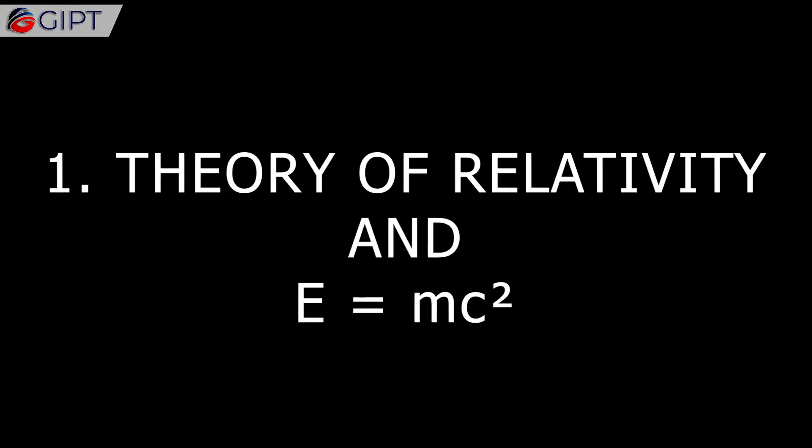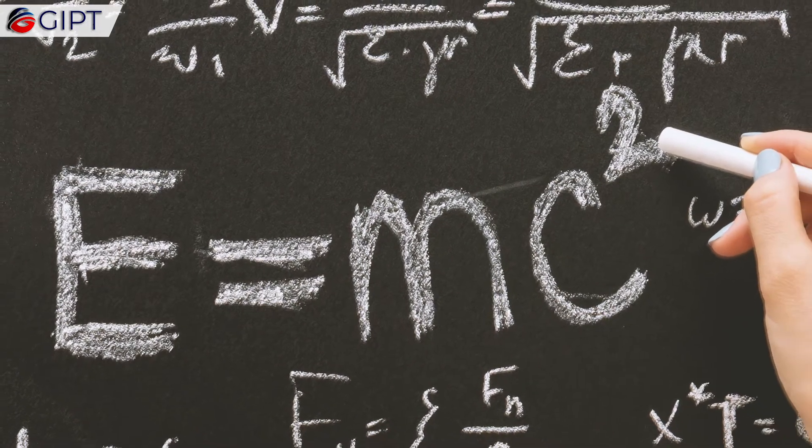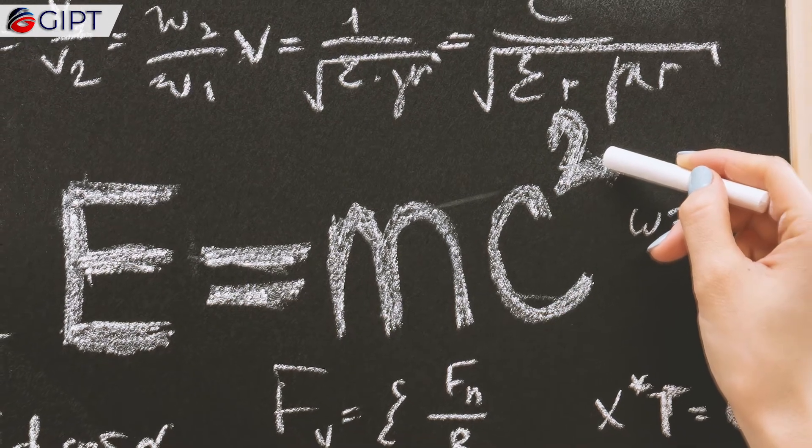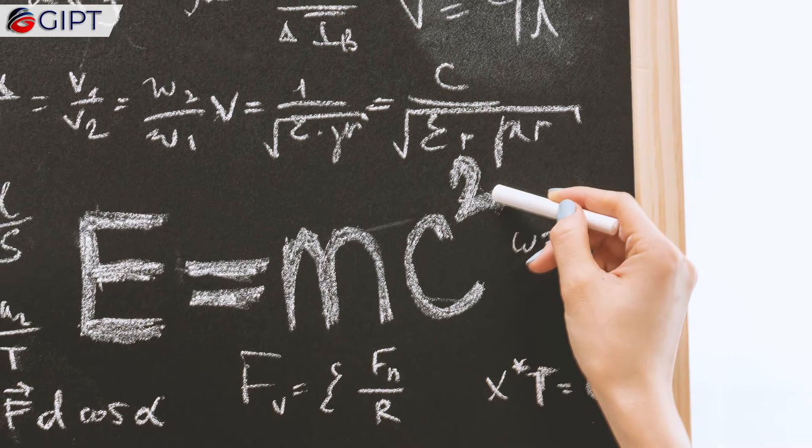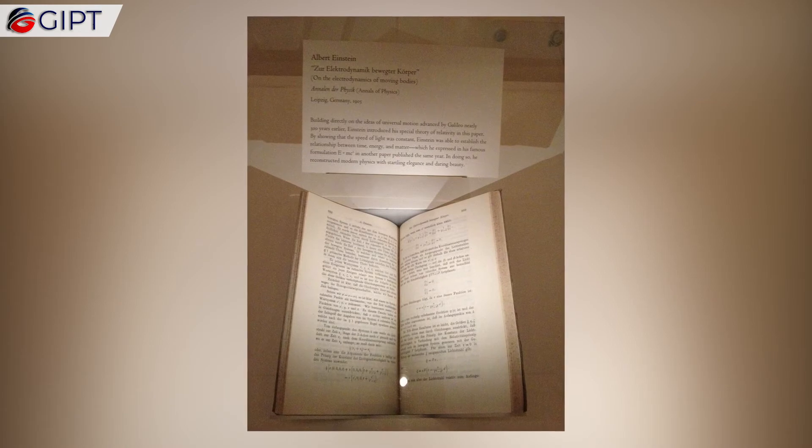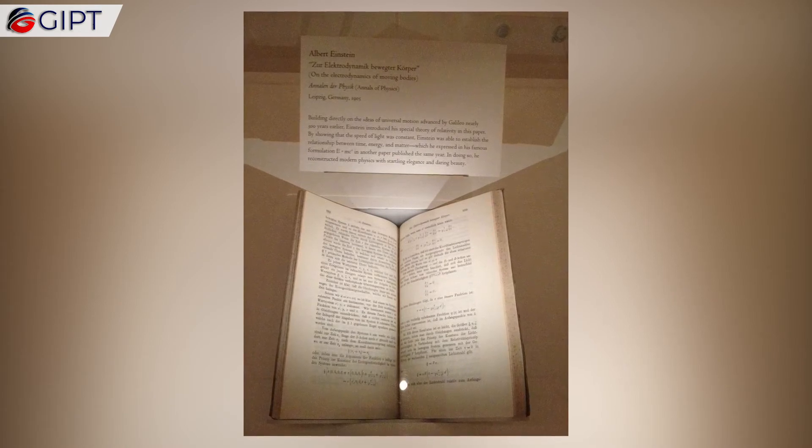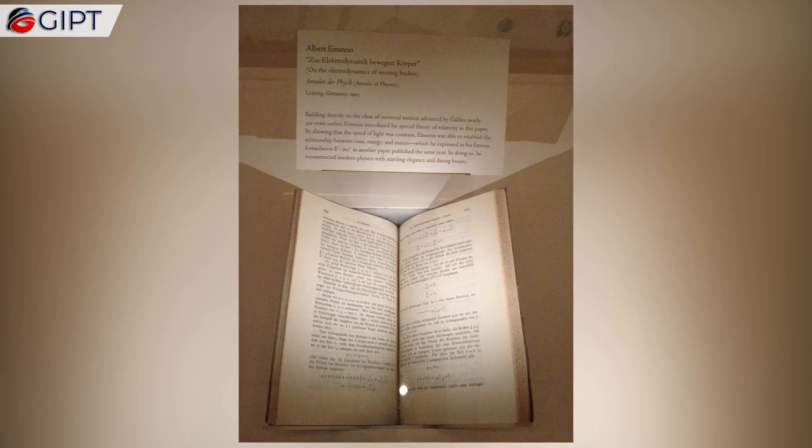Theory of Relativity and E equals mc-squared. Albert Einstein is known all over the world for the famous equation E equals mc-squared. One may not really know what the theory actually is, but the fact that it was Einstein behind it is recognized universally. Einstein's paper on the electrodynamics of moving bodies was received on June 30, 1905, and published on 26 September of that same year.